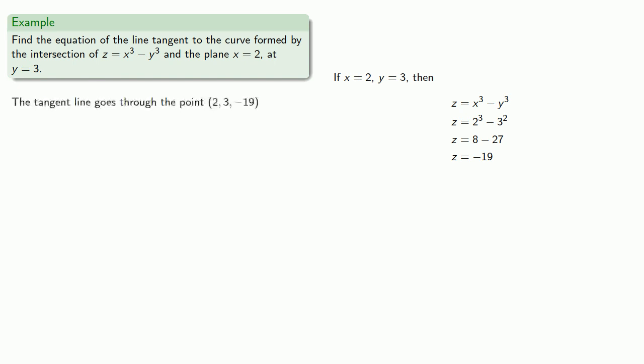And so our tangent line goes to the point two, three, negative 19. And so our equation of the line, well, first we'll navigate to the point two, three, negative 19. So we're on the plane x equals two. And so that means x will always equal two. And one of the things you might remember from single variable calculus is if a value doesn't change, then we can use it before we do any calculus. So since x is always equal to two, our equation then becomes